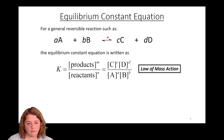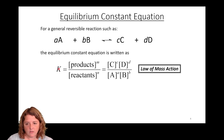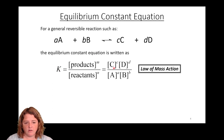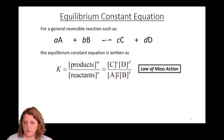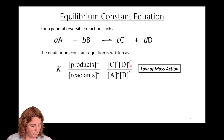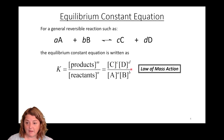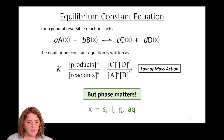As a recap from last time: you've got a generic reaction, and all reactions are defined by an equilibrium constant, which generically is described by the law of mass action — the ratio of products over reactants, not forgetting to raise those to their respective stoichiometric coefficients.